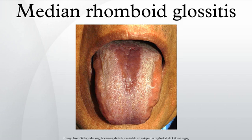Signs and Symptoms – Rarely is any soreness associated with the condition. Apart from the appearance of the lesion, there are usually no other signs or symptoms. The typical appearance is an oval or rhomboid-shaped area located in the midline of the dorsal surface of the tongue, just anterior to the sulcus terminalis. The lesion is usually symmetric, well-demarcated, erythematous and depapillated, with a smooth, shiny surface.